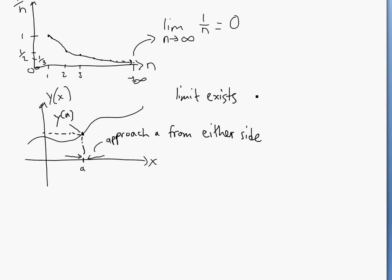Limit exists when you have limit as x approaches a of y of x equals y of a. Let me just write this better. So limit exists when limit as x approaches a of y of x equals y of a from the left and right sides. I'll demonstrate as an example.